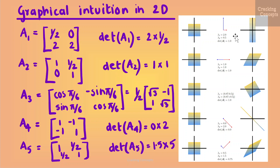Next, the matrix A2 corresponds to a shearing mapping that shears the position along the horizontal axis to the right for points lying on the positive half of the vertical axis and to the left vice versa. This mapping is area-preserving so the determinant is 1. The eigenvalues λ1 and λ2 are both 1 and repeated, and the eigenvectors are collinear. This indicates that the mapping acts only in one direction, that is the horizontal direction.